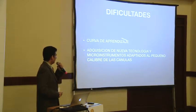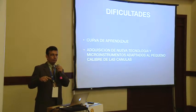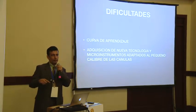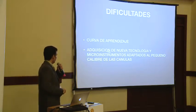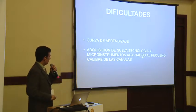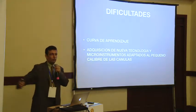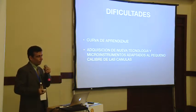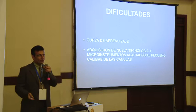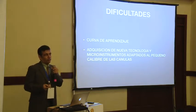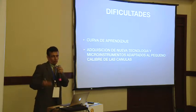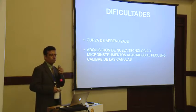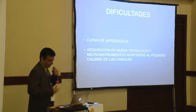Las dificultades: la curva de aprendizaje, aunque actualmente las residencias ya están formando con vitrectomía de calibre pequeño. Lo otro es lo caro: la adquisición de nueva tecnología y los instrumentos adaptados, porque uno ya tenía todo el grupo de instrumentos calibre 20, y al cambiar a calibre 23 o 25 se fue haciendo cada vez más difícil. Algunas compañías producen instrumentos descartables o reesterilizables por gas un par de ocasiones, pero son tan finos que no se pueden usar por mucho tiempo y en la pieza se pueden dañar.